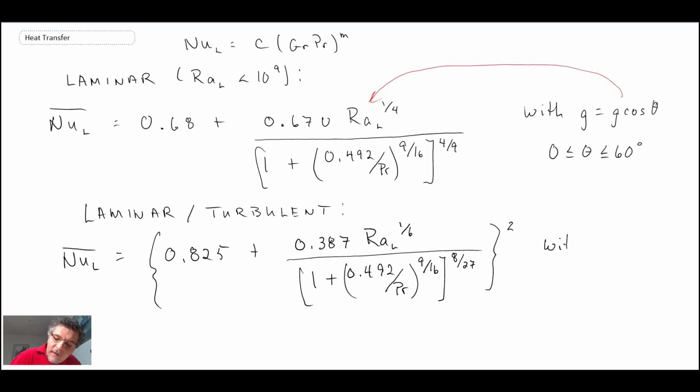So this was the correlation that would pertain to a wider range of Rayleigh number. And this is with g equals g cos theta, and theta ranging from 0 up to 60 degrees.